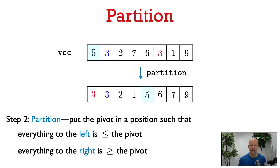The pivot element is already in a valid final position in the sorted order of the vector. This step is called the partition step because we partition the elements into two sets: one where all elements are less than or equal to the pivot, and one where all elements are greater than or equal to the pivot. This partition step is the main subroutine of QuickSort.